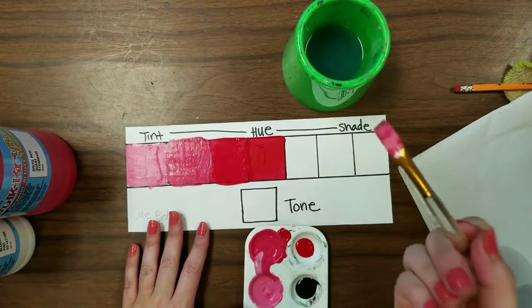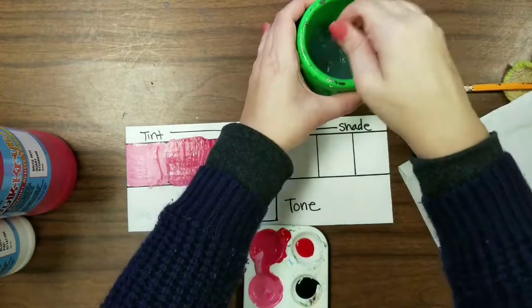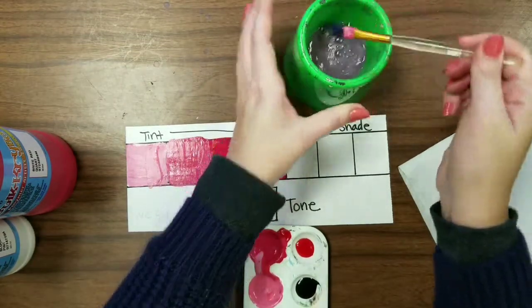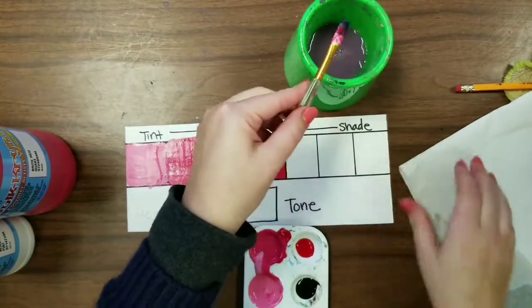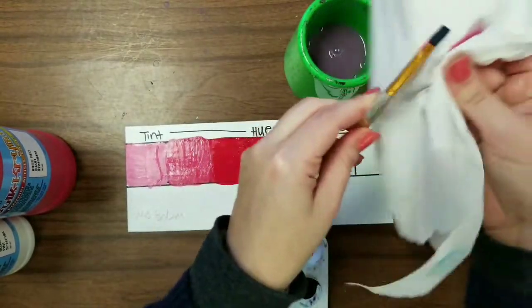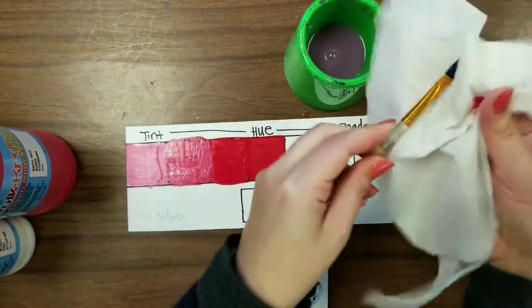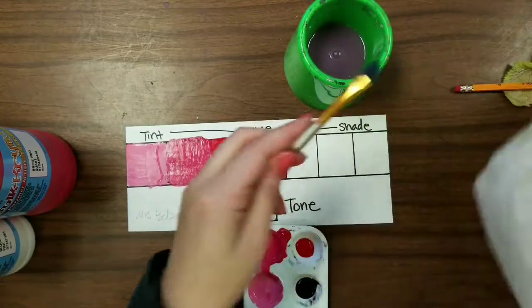When you're done with the tint side, make sure that you wash your brush out really well. So swishing it in the water. And because I have paint that's up higher, you need to use your paper towel and wipe too.